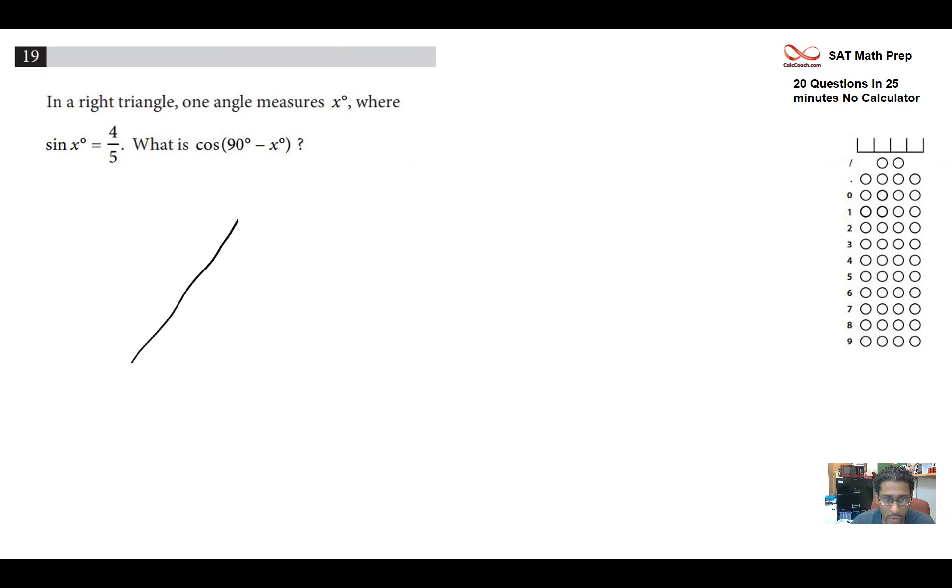Number 19. Right triangle. In a right triangle, there's some x. X is a measure of some angle. And the sine of that angle is 4 over 5. Now remember, sine is opposite. So we're doing trig here. We're doing right triangle ratios. And sine is opposite over hypotenuse. So we have a 4 and we have a 5.